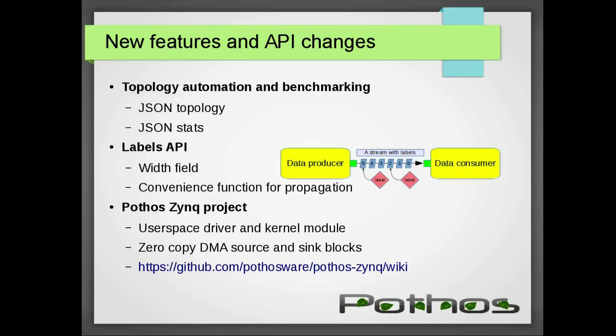As a result of the hackfest, labels are now easier to work with. We had to address how to propagate labels through rate-changing blocks and preserve which elements the label should apply to. For example, if we put a labeled stream through an upsampler and one of those labels was an end-of-burst marker, how do we know — without knowing the upsampling rate — which element that label should apply to? So we've added a width field to labels, which specifies the number of elements from the starting point. A rate-changing block may expand the width when it does upsampling, allowing downstream blocks to determine precisely which element is at the end of a burst.